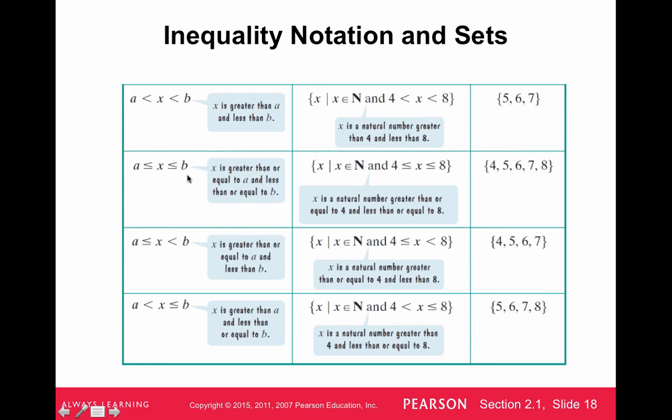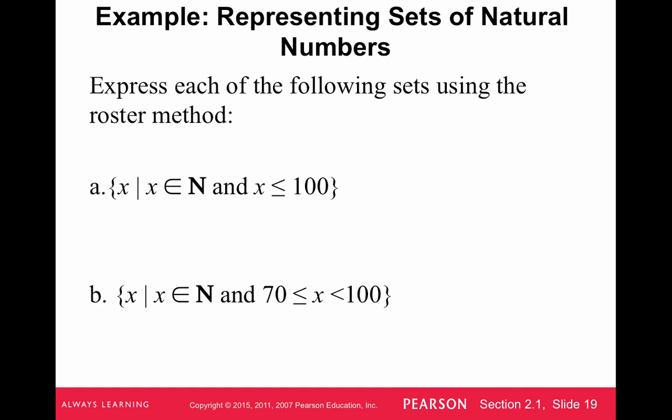These are betweens. This stuff isn't super important, but if you want to write that down, that's fine. Express each of the following sets using the roster method. So we have the set of natural numbers and it's less than or equal to 100. So that's really 1 through 100. And we're going to have to do a dot, dot, dot in the middle to show that it keeps going after 1 and ends at 100.